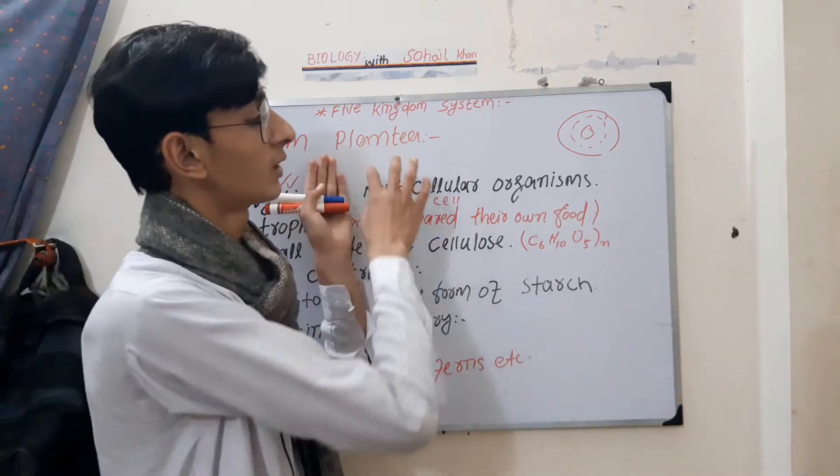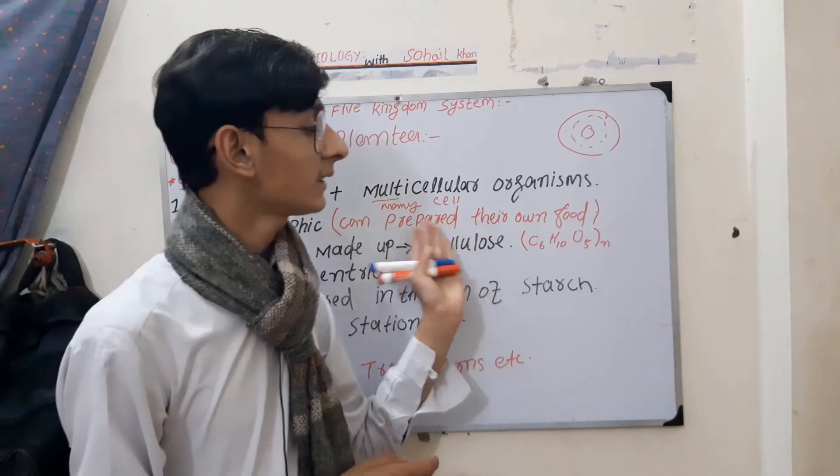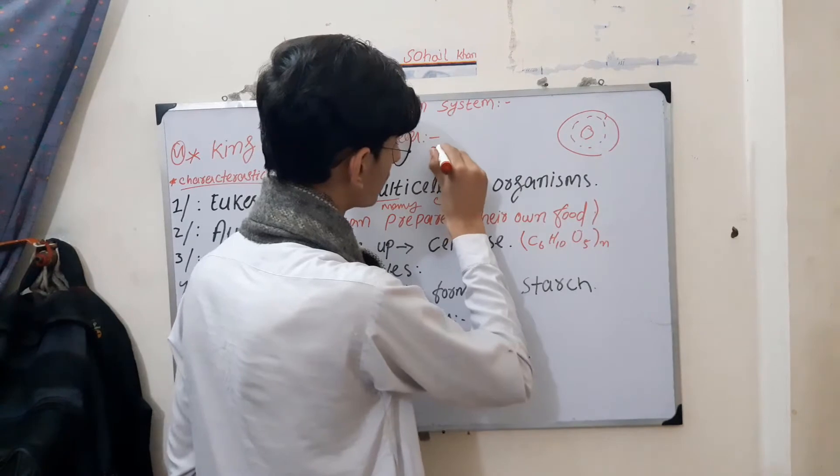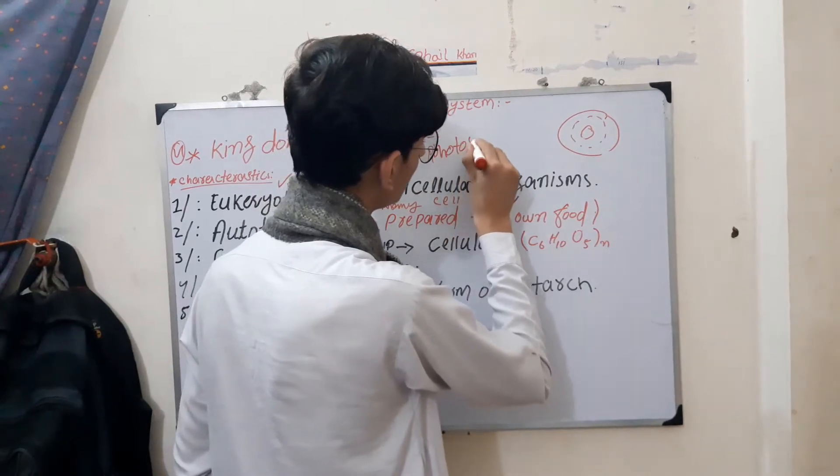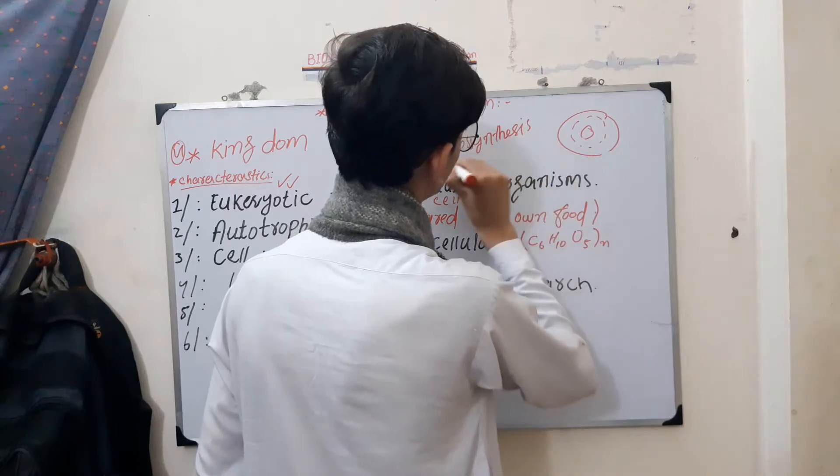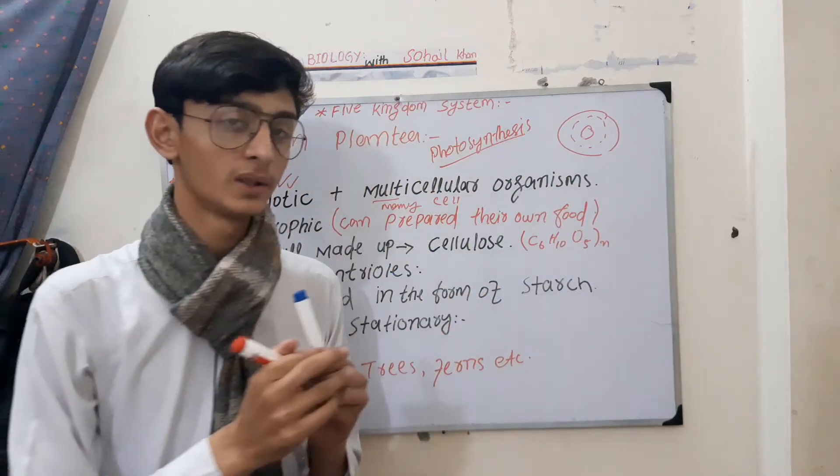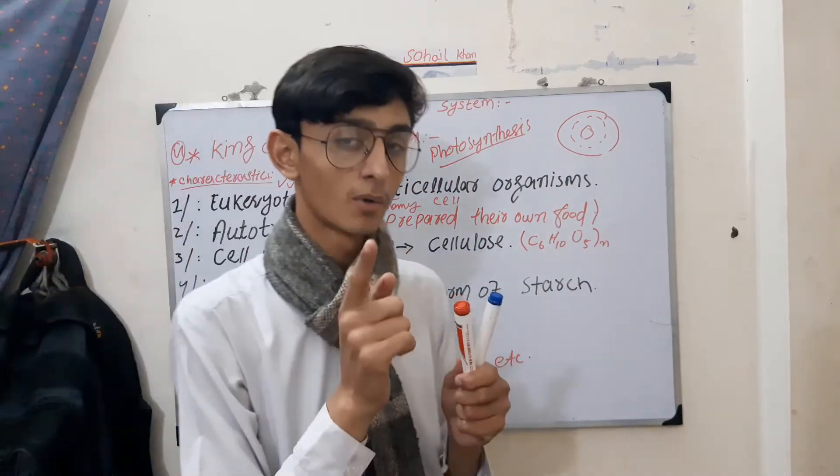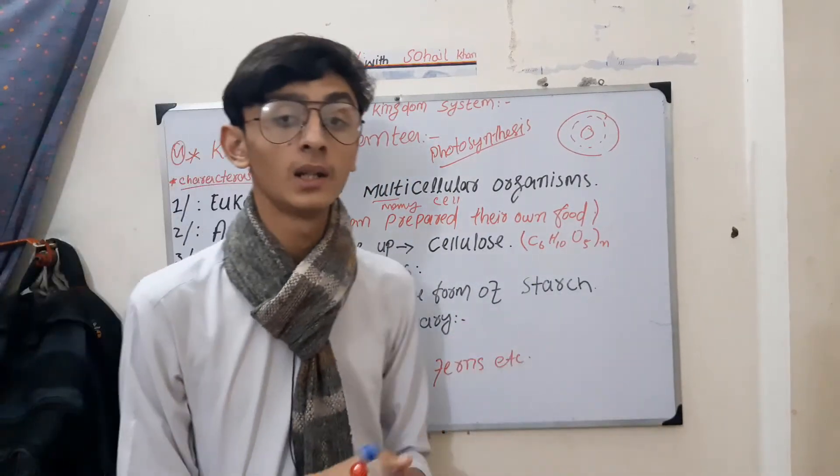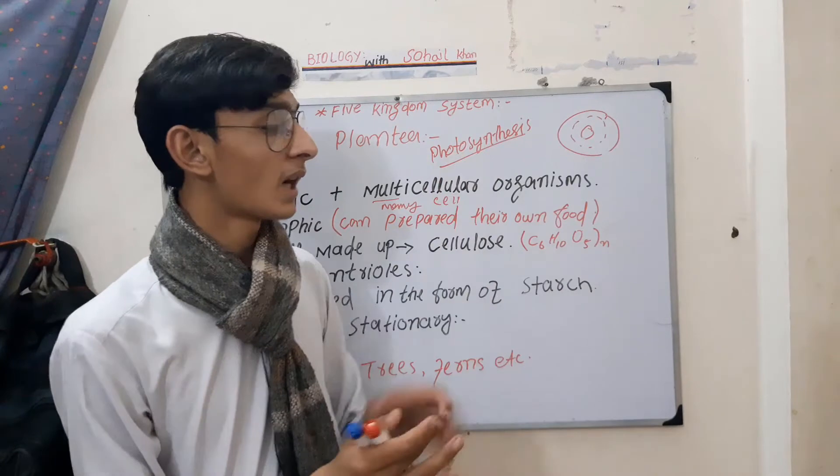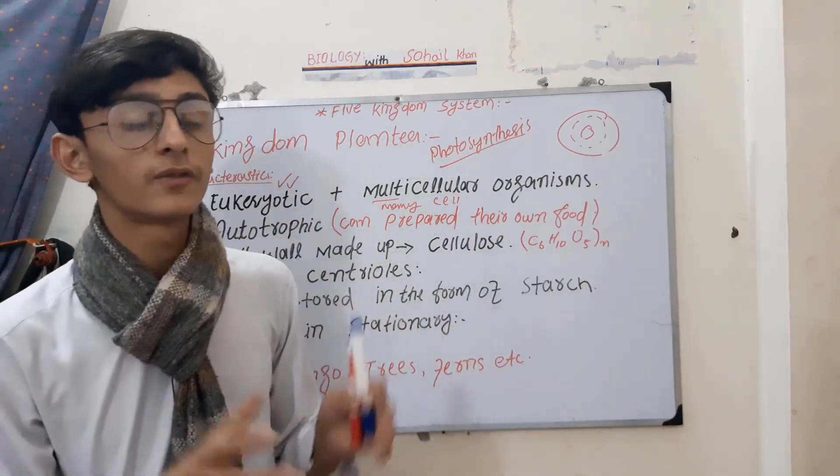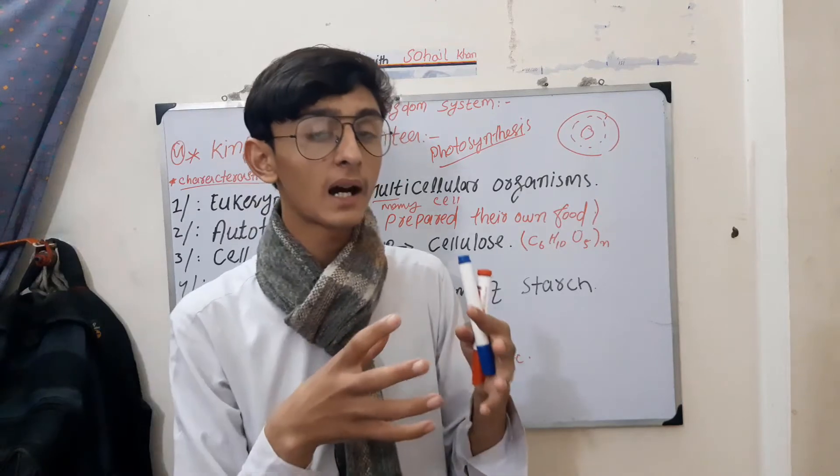Autotrophic means they make their own food. Plants make food through photosynthesis. Photosynthesis is a process that uses sunlight and chlorophyll. Chlorophyll uses sunlight and water in the process.